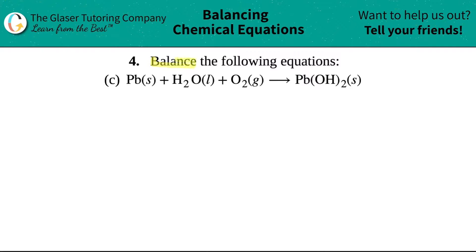Number four, balance the following equations. We have just one equation here from the packet, this is letter C: Pb solid (lead) plus H2O liquid plus O2 gas will yield or produce Pb(OH)2 solid.